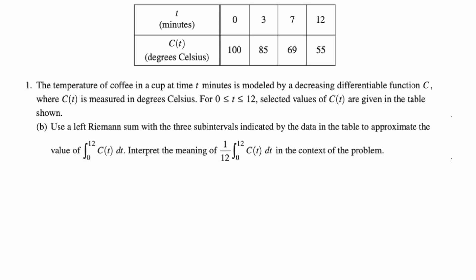So we're going to start off by writing the integral, and it's approximately equal to. So the integral from 0 to 12, C(t) dt, approximately equal to. Left Riemann sum. So from 0 to 3 is 3. And then the left endpoint is 100.